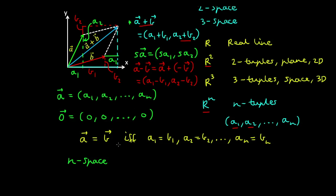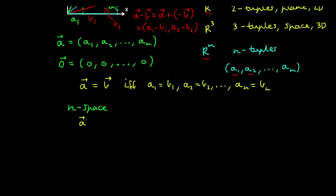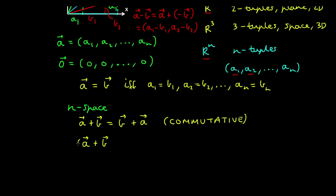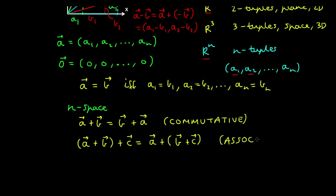We'll extend the operations intuitively to n-space without proving them. Recall that adding a and b is the same as adding b and a — that's the commutative property. Adding a and b, then adding vector c to the result, is the same as adding a to b and c — that's the associative property. These were shown geometrically using the parallelogram and head-to-tail methods in 2-space; they're not obvious in n-space but have been proven. Adding a vector to the zero vector gives that same vector — one of the identity properties.